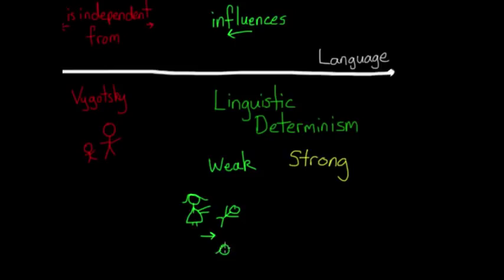If you drew the girl pushing the boy this way, with a girl on the right pushing toward the left, then your native language might be one that reads from right to left, like Hebrew. Now it's not that you can't, or didn't even, draw it the other way. It's just that depending on how your language is structured, it makes it more likely or easier for you to think about that action in a certain direction.